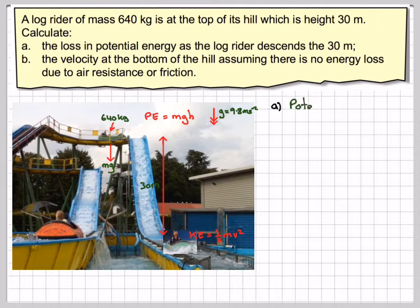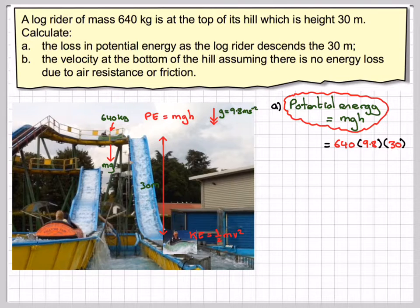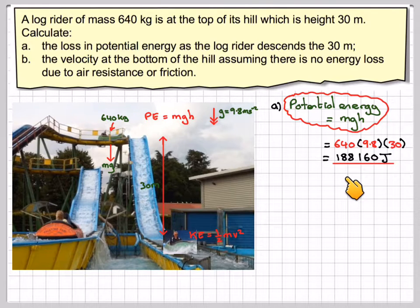So the potential energy is equal to MGH. That's equal to 640 times 9.8 times the height it drops through, which is 30. So the potential energy at the top will be 188,160 joules, or 188.16 kilojoules.